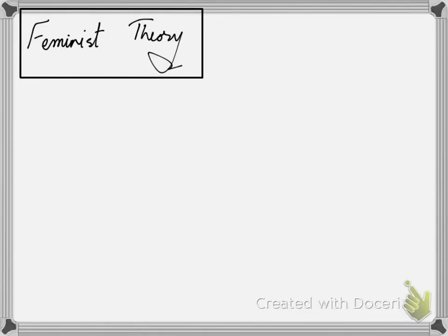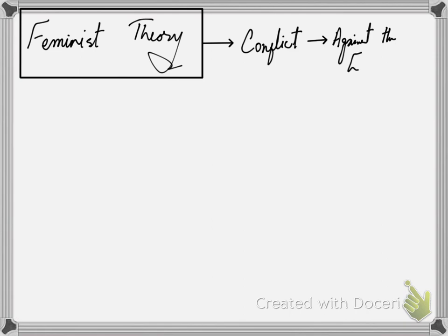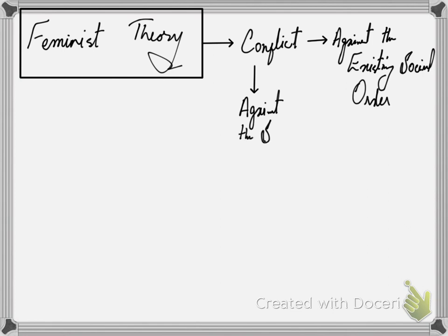If we talk about the feminist theory about the social order, we must understand this very basic thought that this is a part of conflict theory or conflict structuralism. Conflict approach کا مطلب کیا ہوتا ہے? They are against the existing social order. یعنی کہ society کے existing social order کو یہ لوگ oppose کریں گے. اس کے ساتھ ساتھ کیونکہ conflict theory ہے تو وہ against ہوگی social institutions بھی.